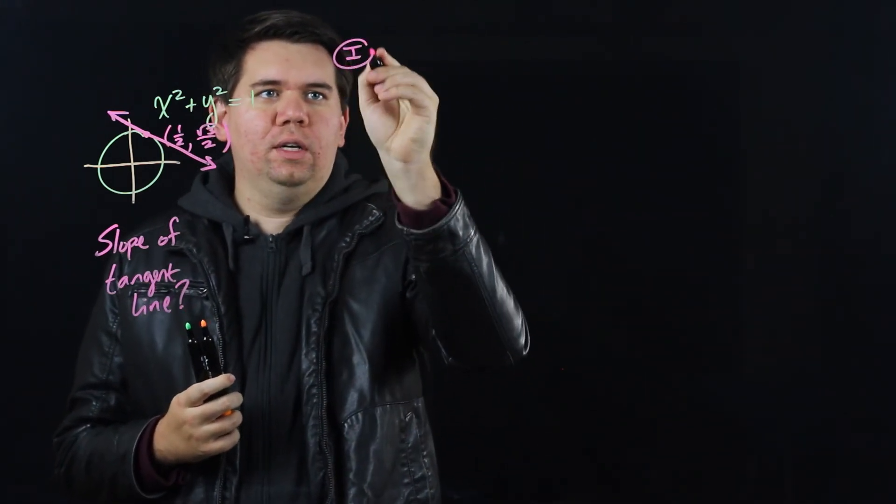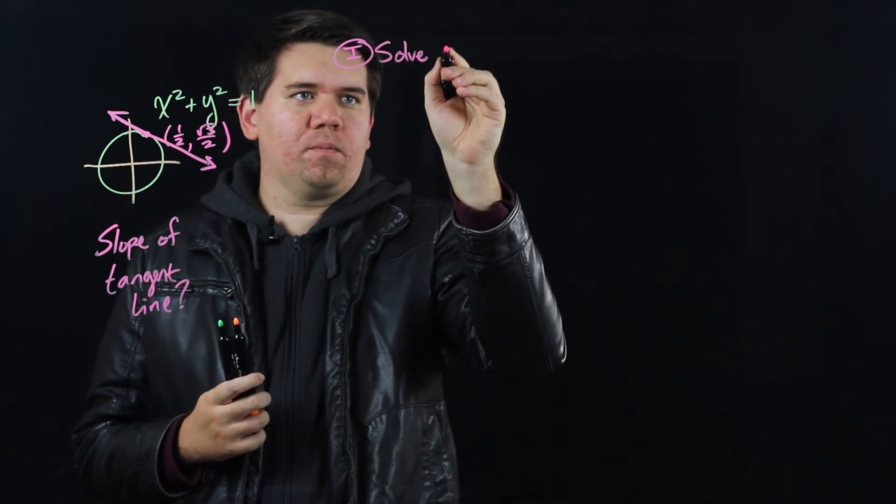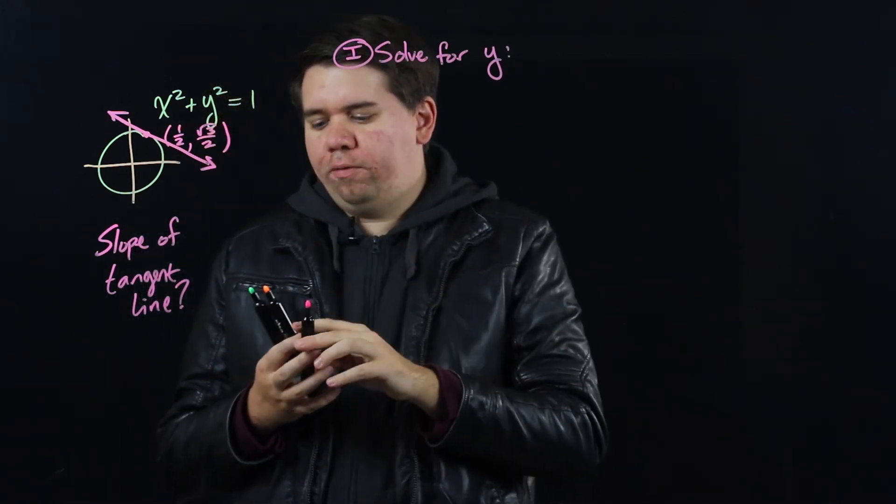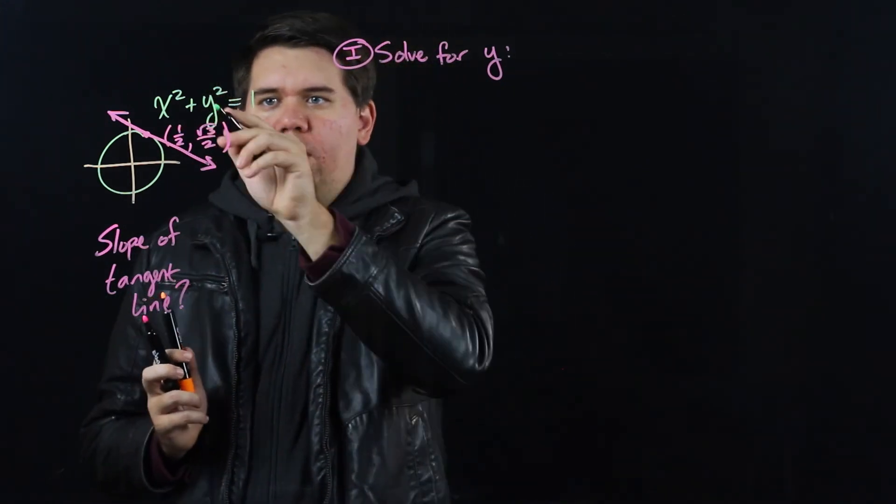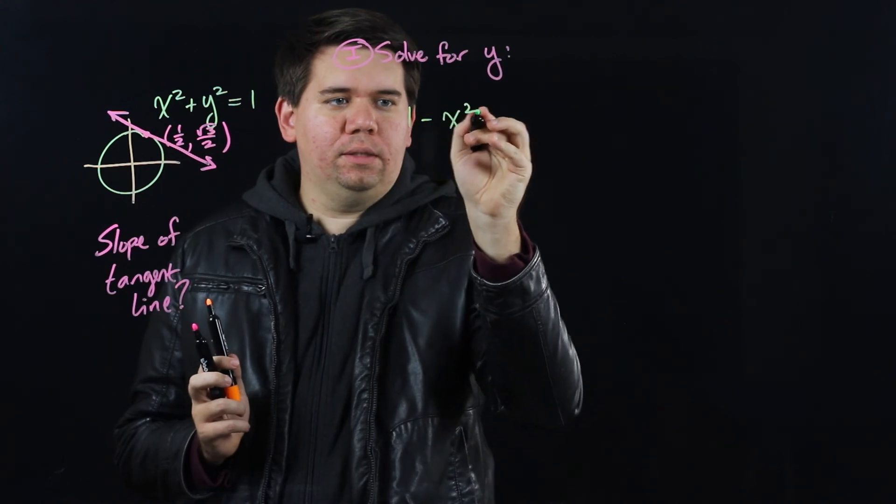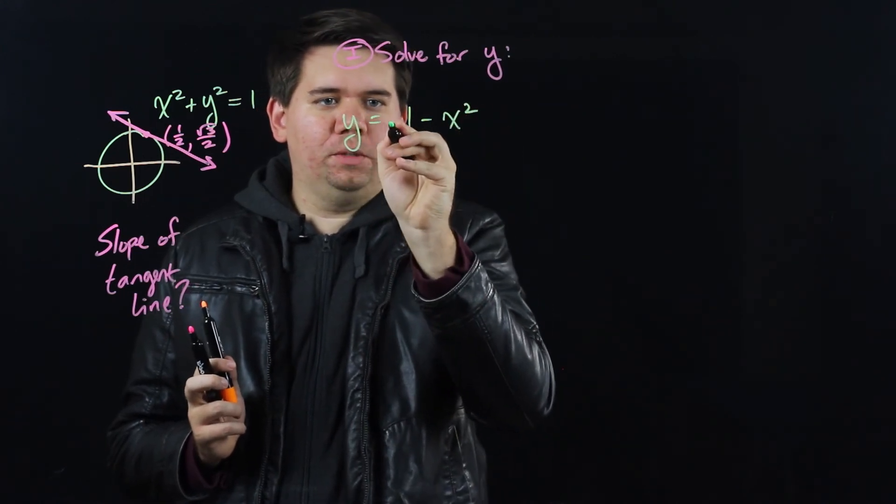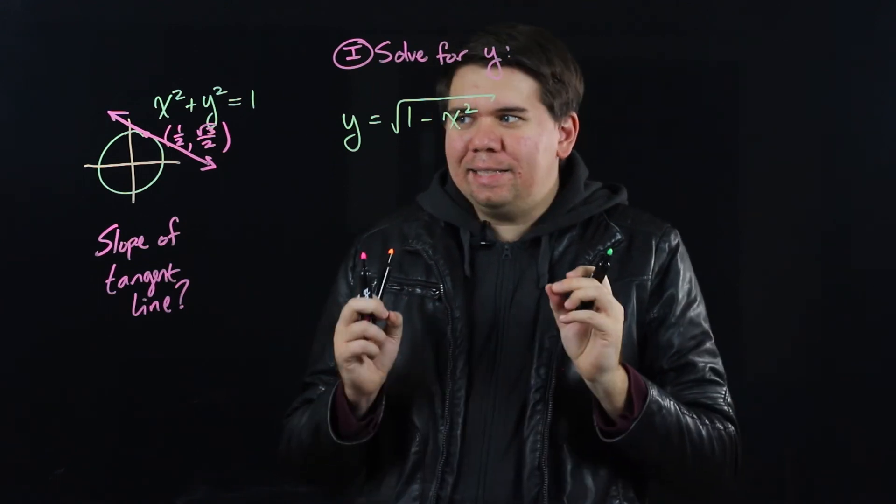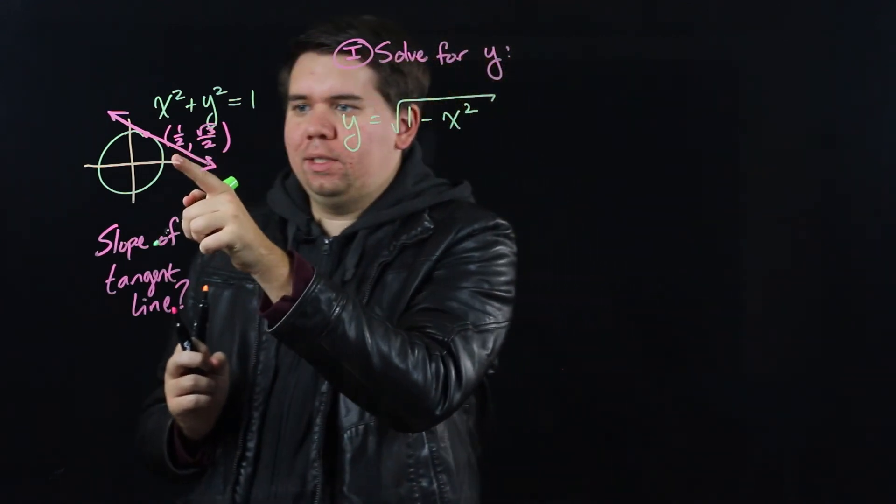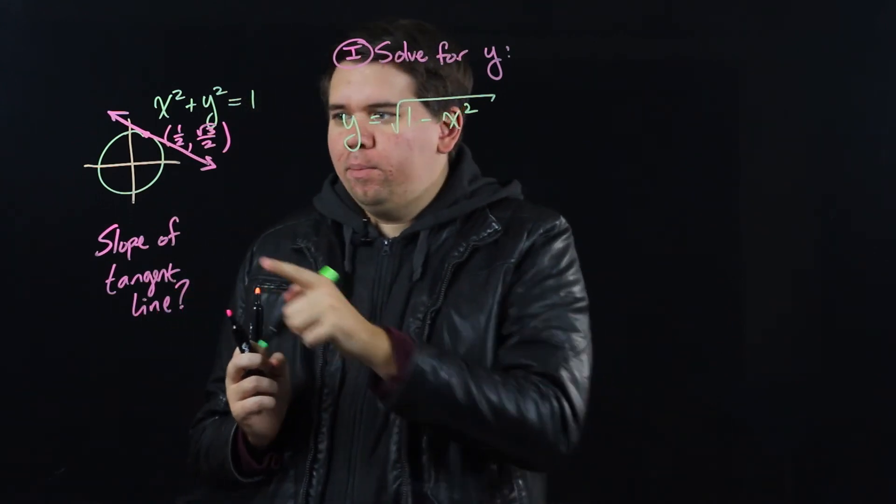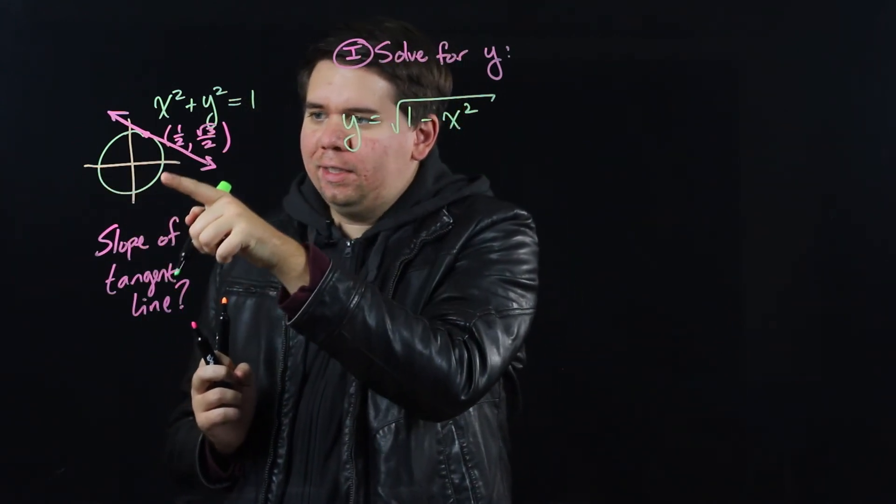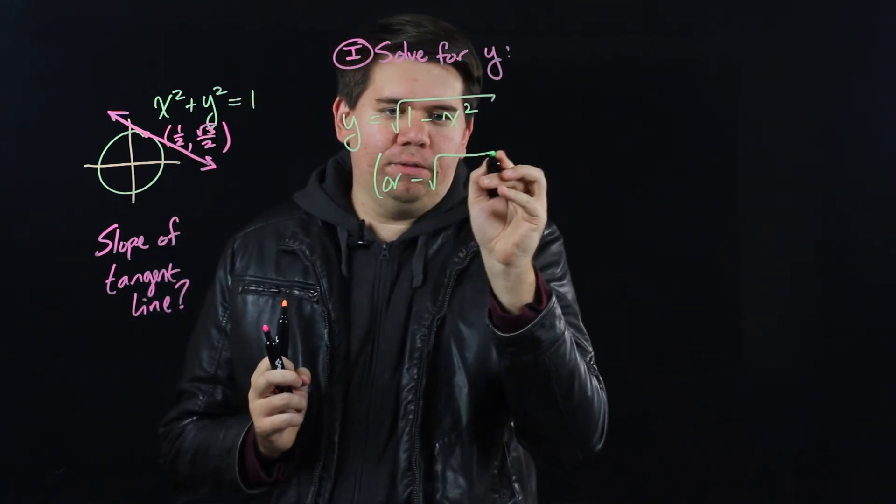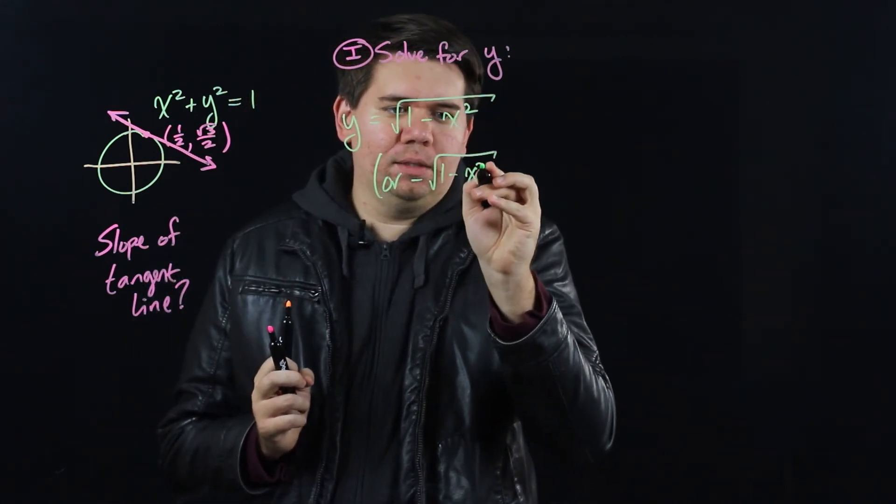And we could say okay, when we solve for y we get y squared is 1 minus x squared. So y will just be the square root of 1 minus x squared. Well that's not quite true. Yes, this will give you the points on the top half. But you also have points on bottom when the y is negative. Where do those come from? Well those come from the negative square root of 1 minus x squared.